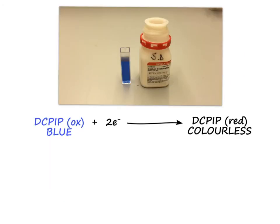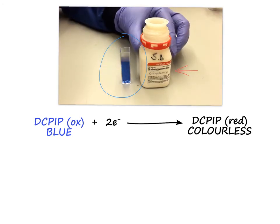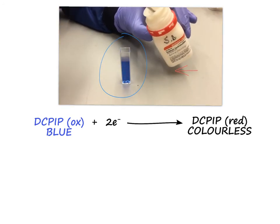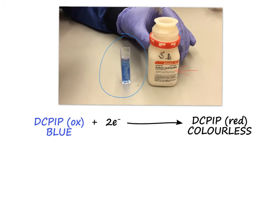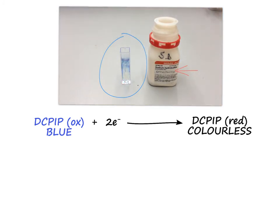So in this practical, we're going to use a redox-dependent indicator called DCPIP. What happens with DCPIP is it starts off blue. When DCPIP receives electrons, it changes colour. Here we've got a chemical called sodium dithionite, which is a really potent reducing agent — it's got a lot of electrons that it can give off. If we watch what happens when we add the sodium dithionite to this DCPIP solution, you can see that quite quickly the solution decolourises — it changes colour in response to the amount of electrons that are present.